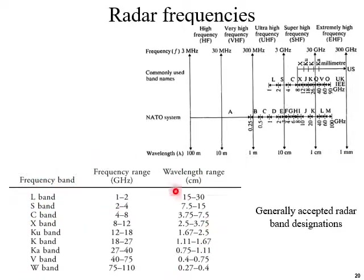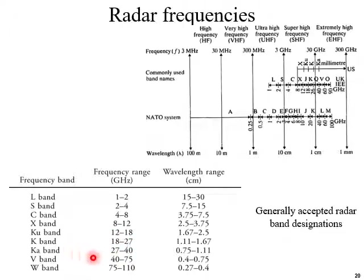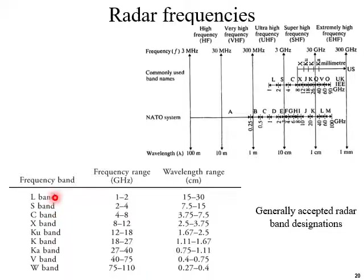These are the generally accepted radar frequency band designations: L band 1–2 GHz, S band 2–4 GHz, C band 4–8 GHz, X band 8–12 GHz, Ku band 12–18 GHz, K band 18–27 GHz, Ka band 27–40 GHz, V band 40–75 GHz, and W band 75–110 GHz. All these bands are not useful for every kind of radar — depending on the type of radar and the type of target to be detected, we have to select the proper frequency band.